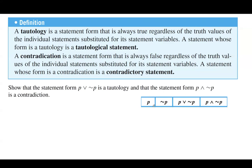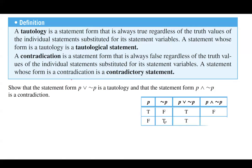Let us create the truth table. We have P and NOT P, connected by OR and by AND. If P is true, NOT P is false. True OR false is true; true AND false is always false. If P is false, NOT P is true. False OR true is true; false AND true is false. So P OR NOT P, regardless of the values of P, is always true — it is a tautology. P AND NOT P is always false — it is a contradiction.